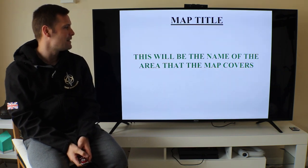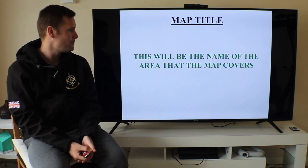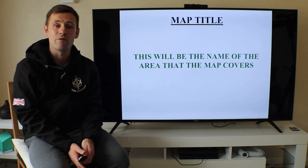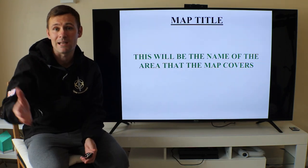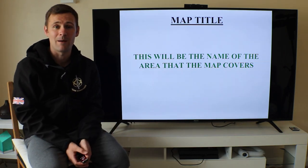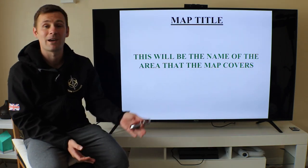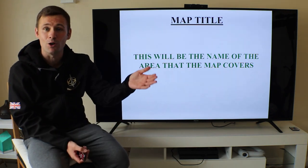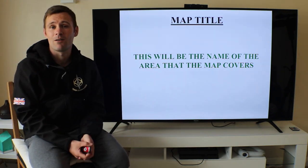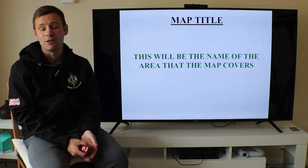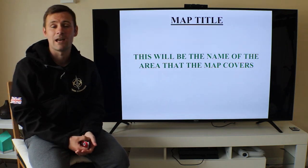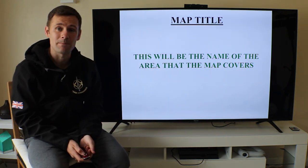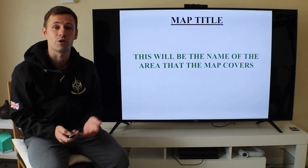Map title — this will be the name of the map and the area that it covers. If you're going out on Dartmoor, you need to make sure you've got a Dartmoor map, not a Brecon map. If you're going up to Scotland, say up in the Isle of Skye, you don't want a Ben Nevis map. Check your map title first to make sure you've got the right map.